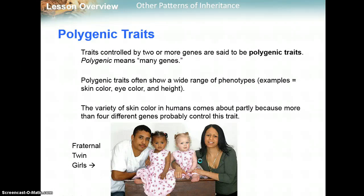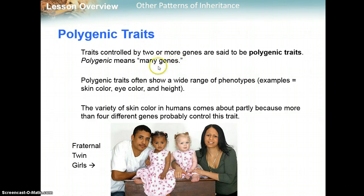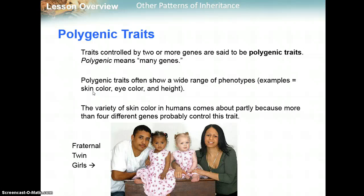Another type of different scenario is something called polygenic traits. These are traits that are controlled by two or more genes — poly means many, so it means many genes. Polygenic traits often show a wide range of phenotypes. For example, skin color: you can be very light, kind of light, a little darker, medium, kind of dark, or very dark. Eye color ranges from dark brown to light brown, hazel, green, blue, and all sorts of mixtures.